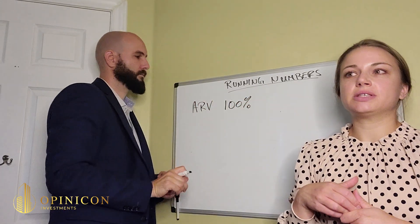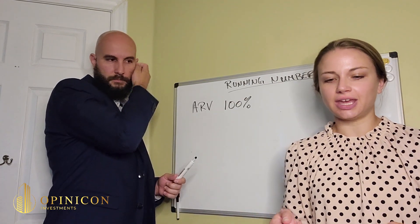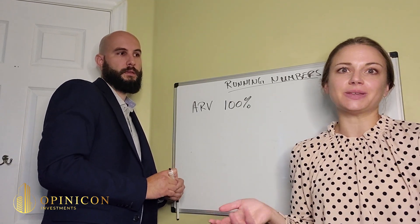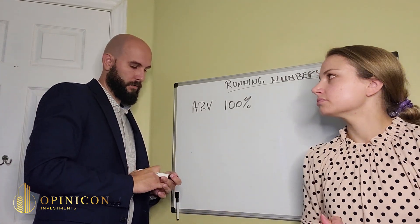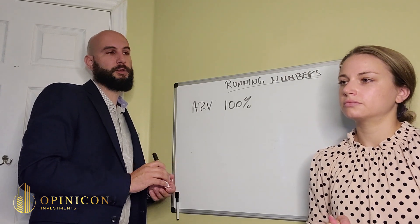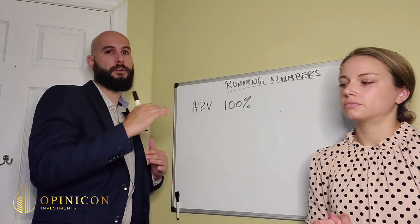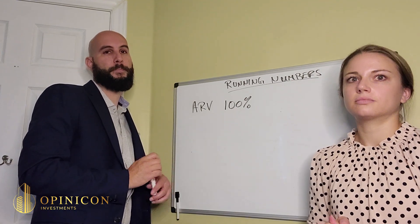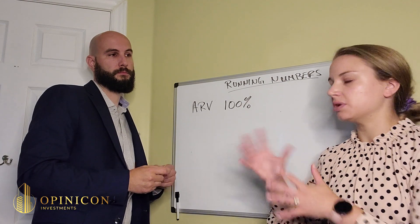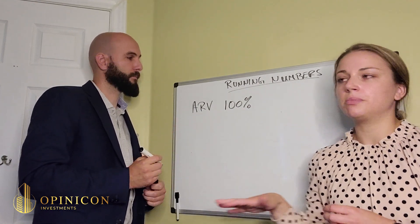The first method we're going to teach you is called napkin numbers. The idea is that if you're at dinner, you can literally take a napkin and write this down quickly to show someone. Investors — especially high net worth individuals — don't want all the nitty-gritty details of every renovation. They just want to know you have a system, that you know your numbers, and that your numbers actually make sense. We've tailored these percentages a little bit to Ottawa specifically.